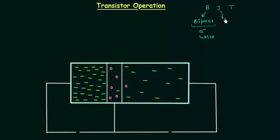J stands for junction. Two junctions are formed in the transistor: junction J1 and junction J2. So we have junction in the name.